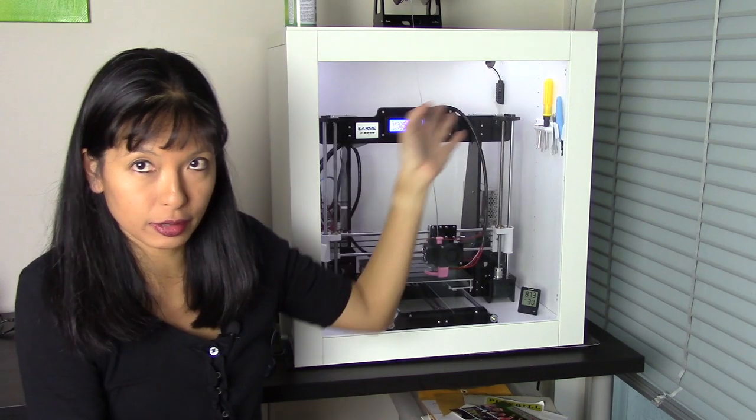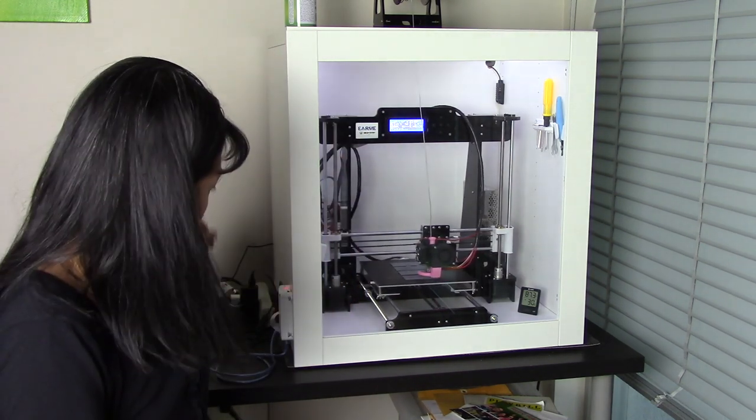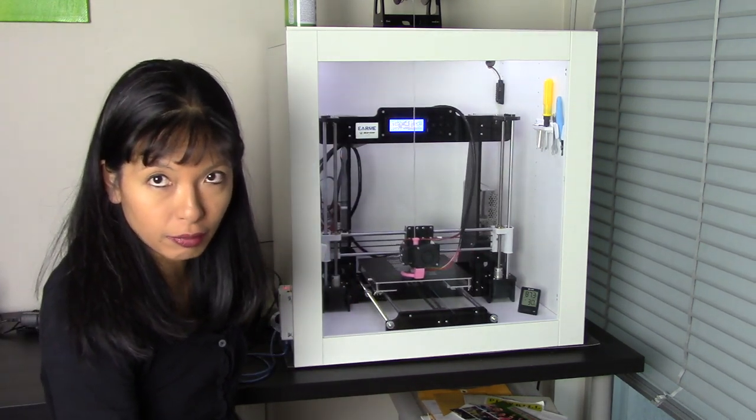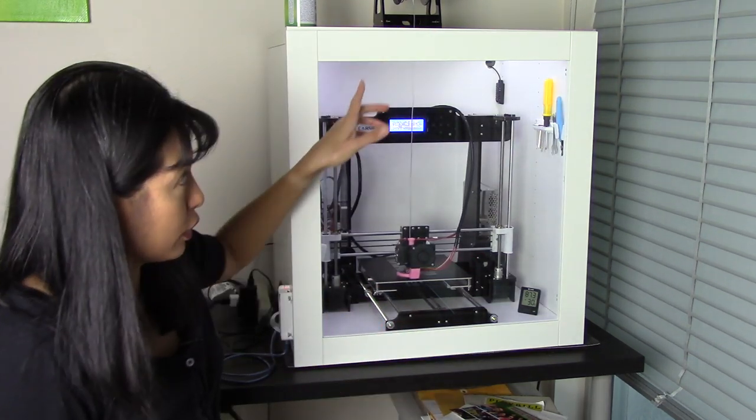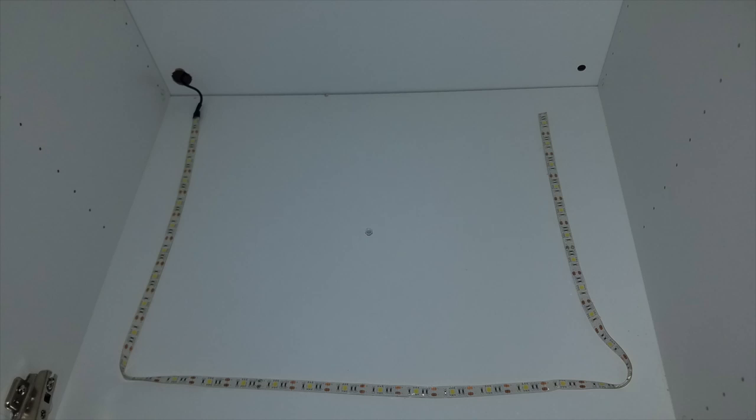As you notice, it is quite well lit. Let me turn it off here for a second so you'll see what it looks like with it off. It's quite a bit darker with this off. Turn that back on again. I do have a four foot string of LED lights that I stuck to the ceiling.